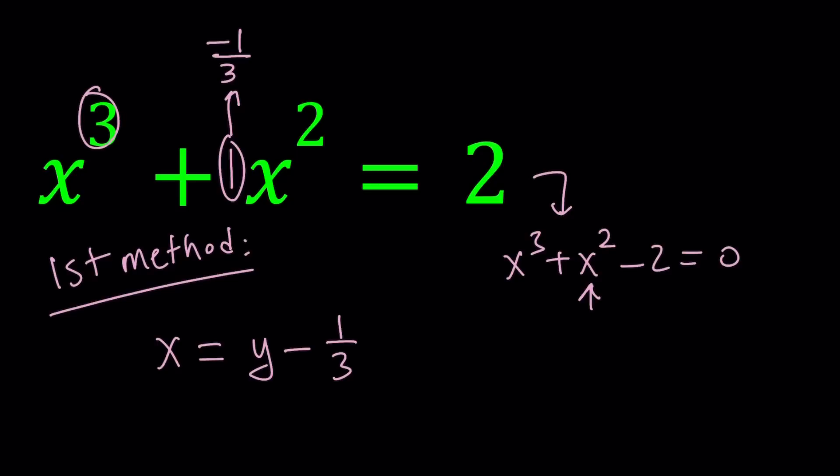x equals y minus one third, which is y plus negative one third, same thing. So it tells you that if you have a quartic then you're going to divide by four. Quintic, no quintic formula but you could probably still do it. Let's go ahead and solve this.